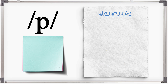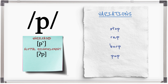When P is at the end of a word, various additional pronunciations are possible. Unreleased P is when you can't really hear any release of air: stop, rap, burp, up. Glottal reinforcement is where a glottal stop occurs directly before the P and it's very common: stop, rap, burp, up.